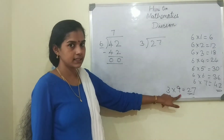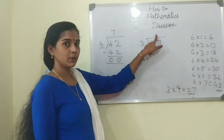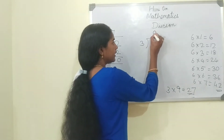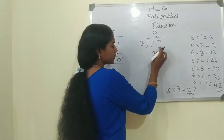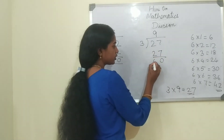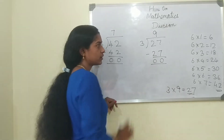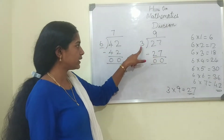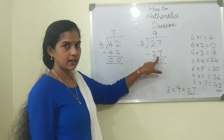We are going to write which number over here? 9. So 3 nines are 27. 7 minus 7 is 0, so 27 minus 27 is 0. 3 how much are 27? 3 nines are 27.